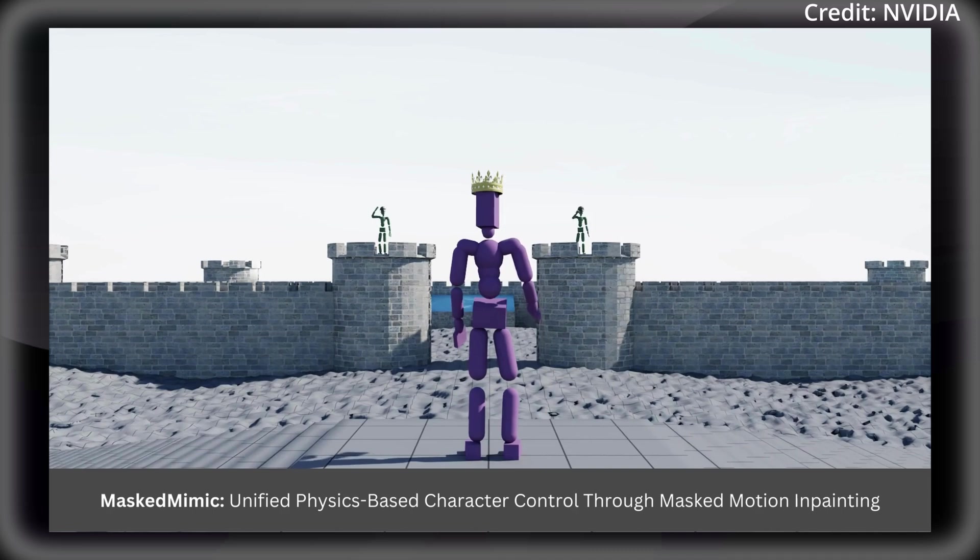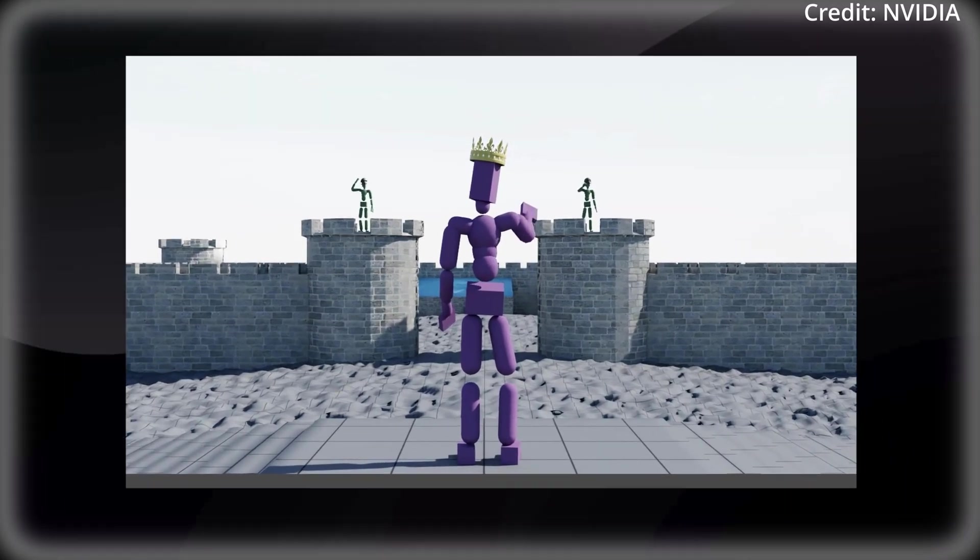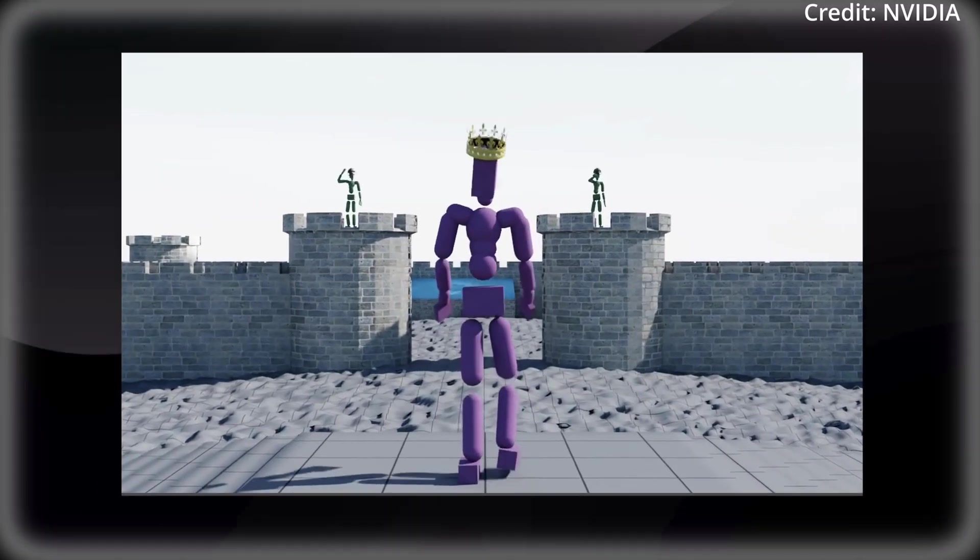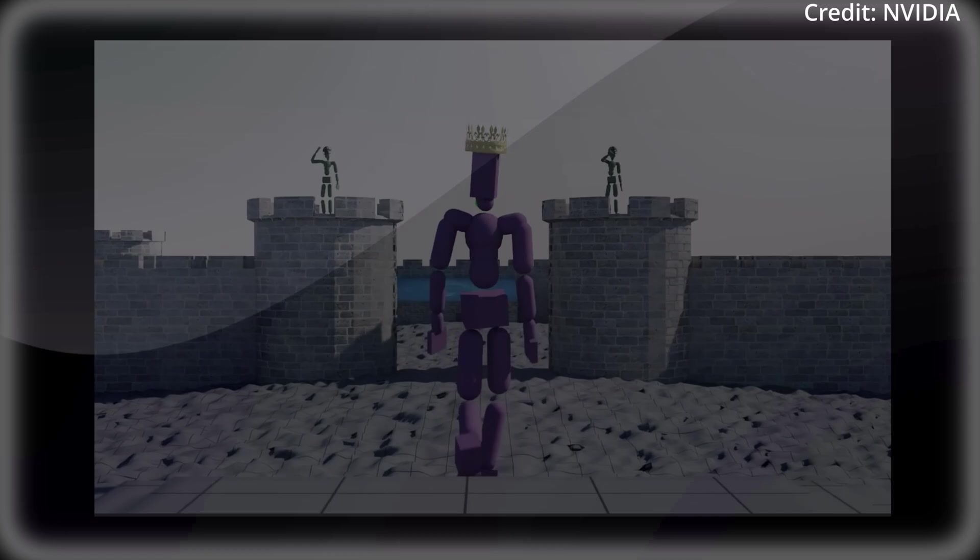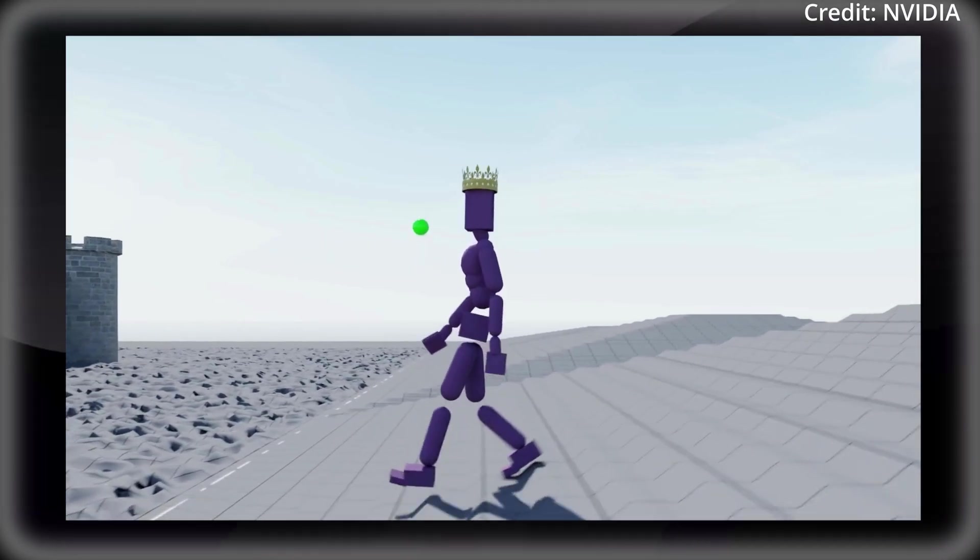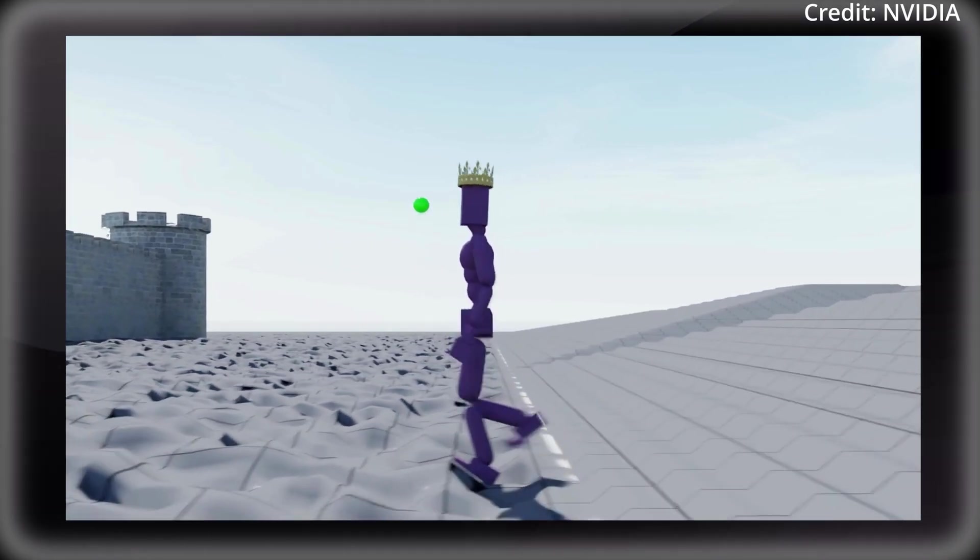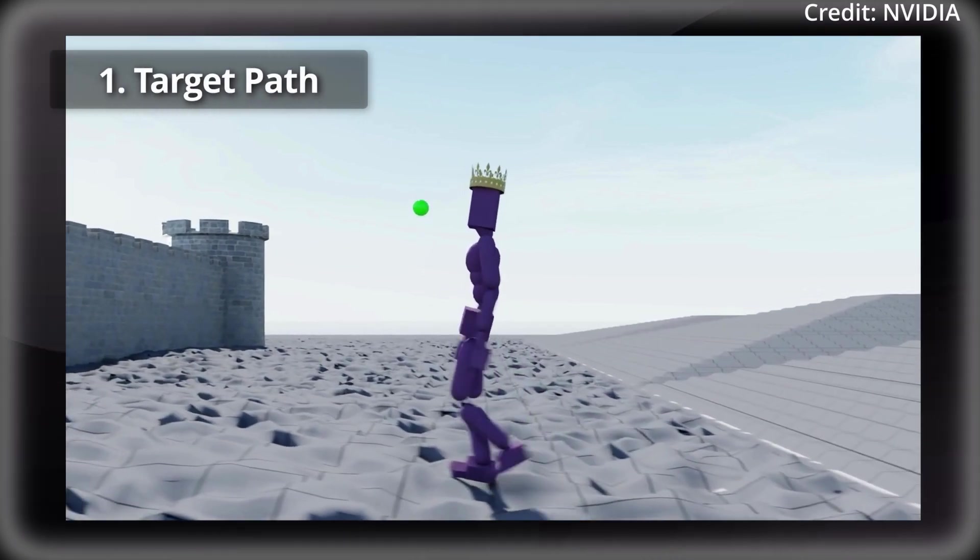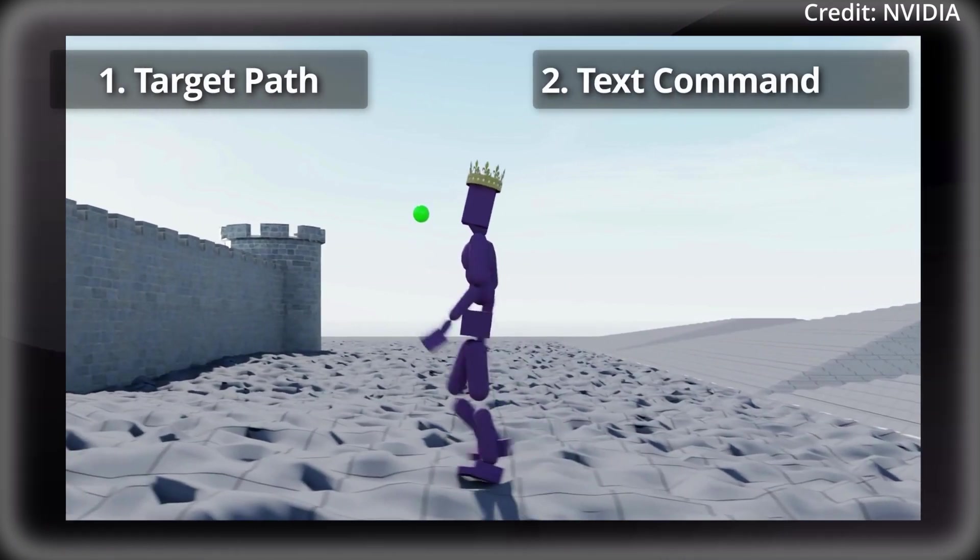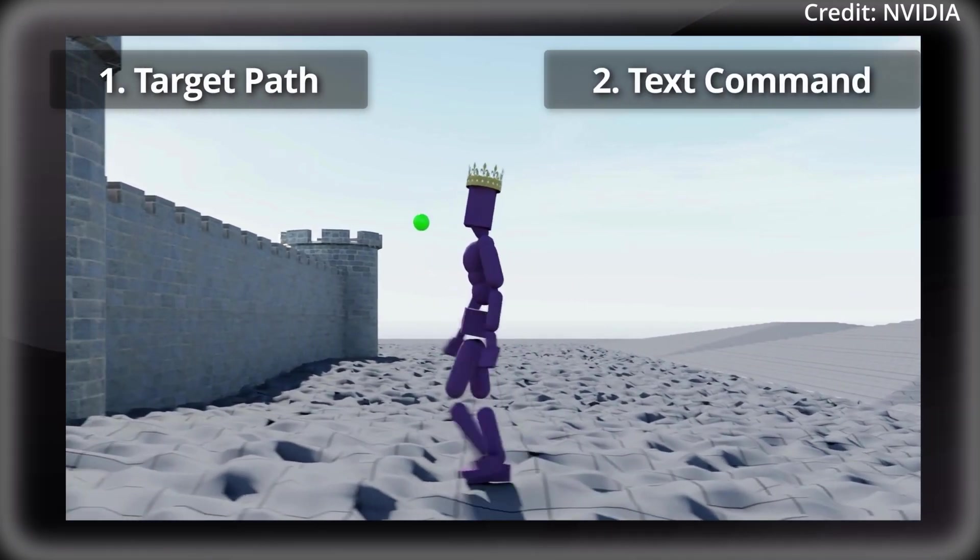A text description or target positions for some joints in certain frames. These are examples of a partial description of a requested motion. In case you're wondering, I am currently being provided with two constraints. One is a target path for me to follow. Two is a text command that tells me to walk naturally.